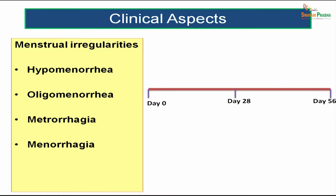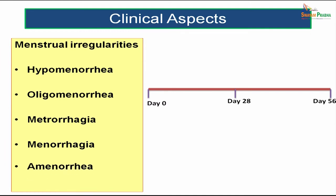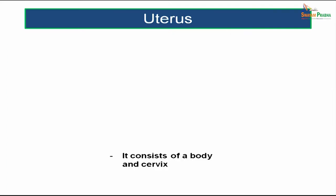Another condition is known as menorrhagia — tremendous blood flow during our regular period. And sometimes we will not even get normal blood flow; that is known as amenorrhea. In order to understand all these menstrual irregularities, you should have a clear idea about the female reproductive cycle.